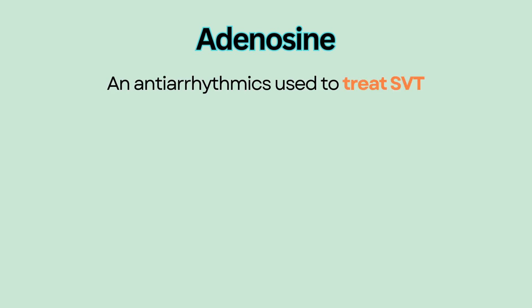Adenosine is an antiarrhythmic used to treat SVT, or supraventricular tachycardia. Supraventricular means above the ventricles. SVT is a rapid and erratic rhythm generated from the atria, usually at a rate of 150 beats per minute.